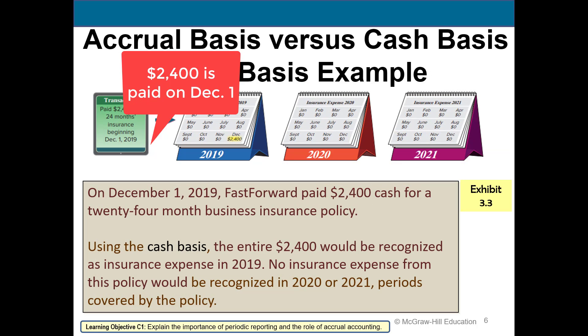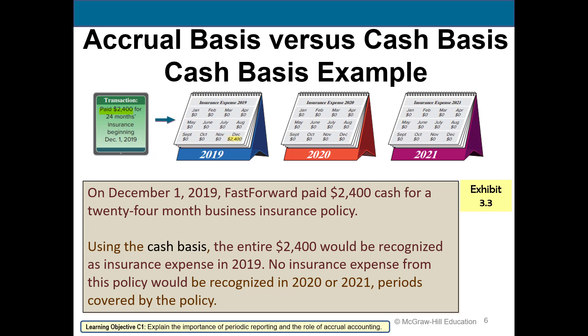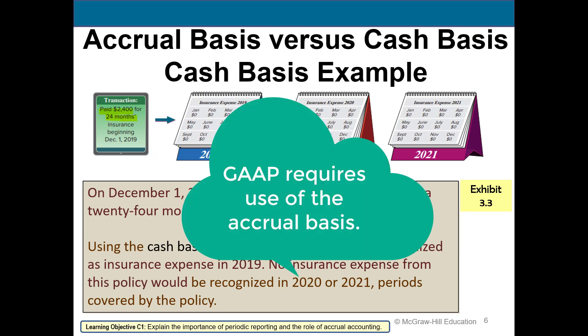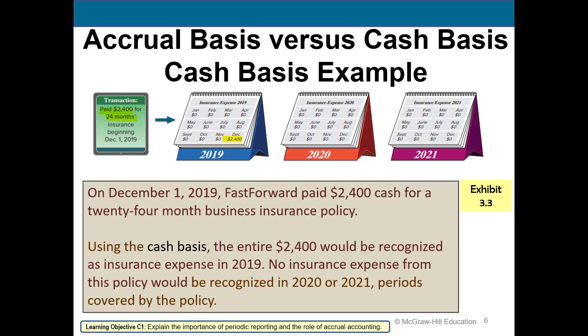Under the cash basis, if they pay $2,400 for 24 months of insurance, the entire $2,400 is recorded as an expense on the date it is paid.